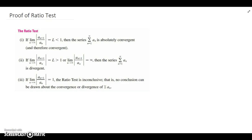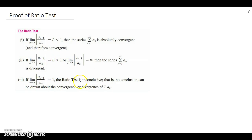Let's go look at the proof of the ratio test and why it makes sense. The first case says that if you look at the ratio of two successive terms at any point down the line, and that's less than one, then this series will absolutely converge — or in other words, convergence is implied. If that ratio is bigger than one, it diverges, and if we end up with one, then we can't make a conclusion. Let's look at this case by case and focus on case one.